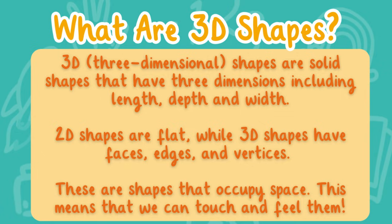2D shapes are flat while 3D shapes have faces, edges, and vertices. These are shapes that occupy space, which means that we can touch and feel them.